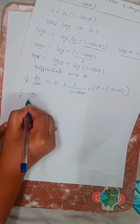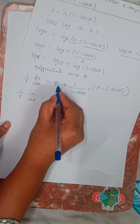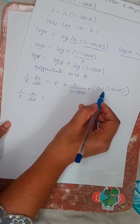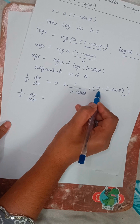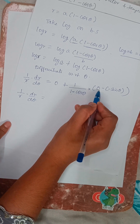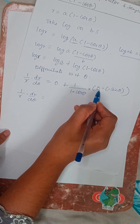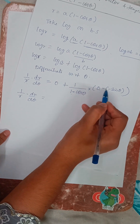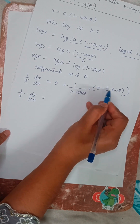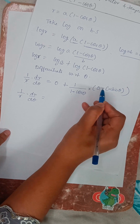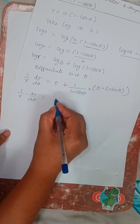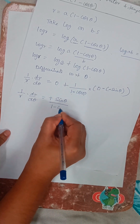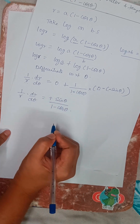So (1/r)(dr/dθ) = sinθ/(1 - cosθ). The minus of minus sinθ becomes plus sinθ, giving sinθ/(1 - cosθ).